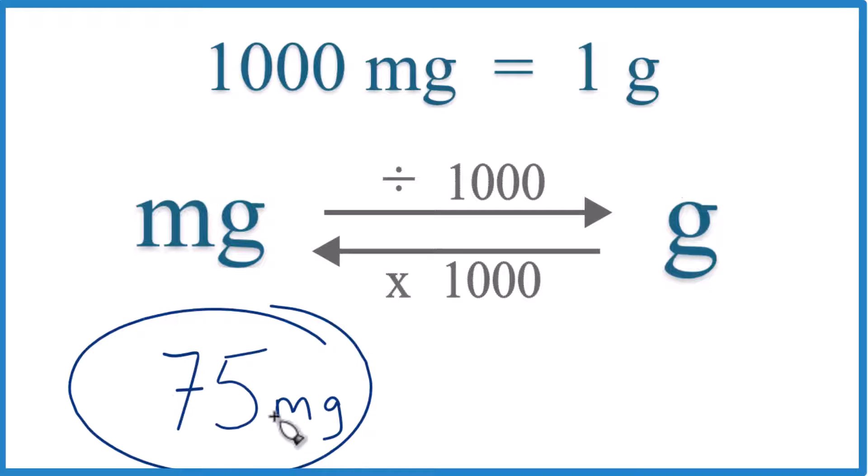If you need to convert 75 milligrams to grams, here's how you do it. First off, you need to know that 1,000 milligrams equals 1 gram. So there's 1,000 milligrams in 1 gram.